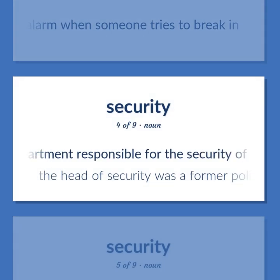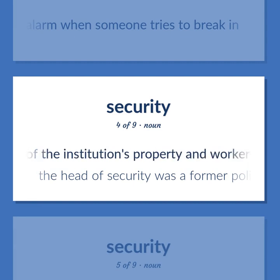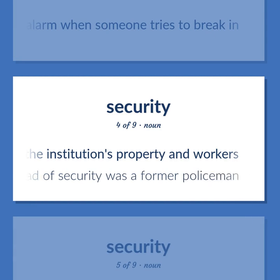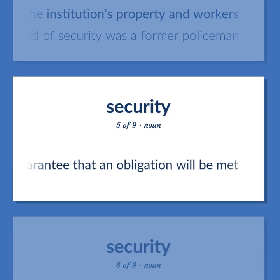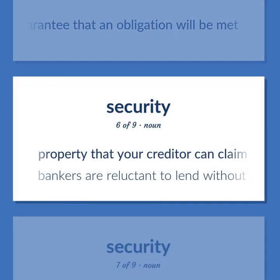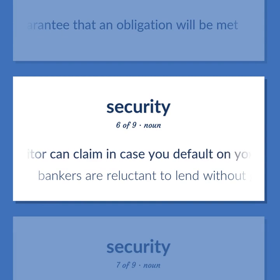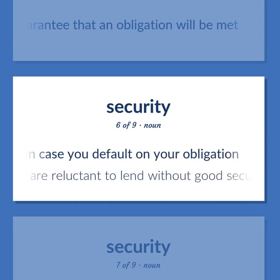A department responsible for the security of the institution's property and workers. The head of security was a former policeman. A guarantee that an obligation will be met. Property that your creditor can claim in case you default on your obligation. Bankers are reluctant to lend without good security.